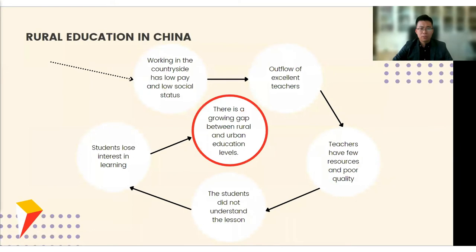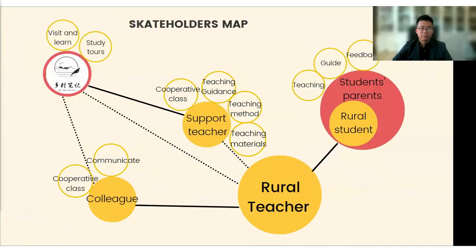Even though there are still a large number of teachers willing to go to the countryside to help the rural development of education, they have to face a harsh teaching environment. How to help them improve the quality of the classroom and teaching ability is a problem that we need to solve. The main contacts of rural teachers during their work are rural students and colleagues, and they lack channels for learning and communication with the outside world.